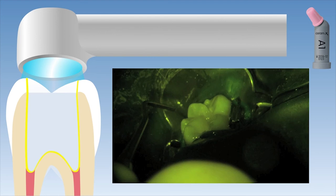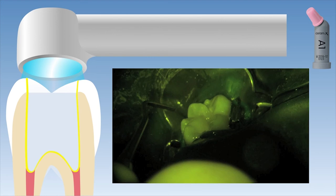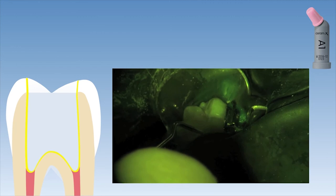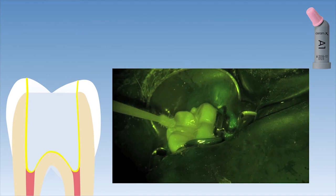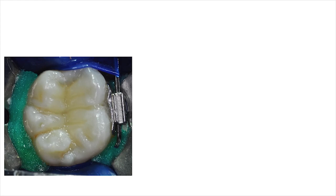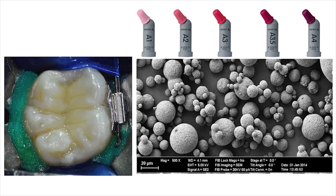The last step for restoration of this access cavity is to cover the SDR material with a normal, regular viscosity composite resin. On this video you can see that the SDR material was capped by applying Ceram X Spectra ST composite resin, shade A1, using the successive cusp buildup technique. This figure demonstrates the aesthetically pleasing restoration obtained after finishing and polishing. The new Ceram X Spectra ST material contains primary glass fillers with a mean size of 0.6 microns to create granulates in a mean size of 15 microns, produced in a spray drying process, resulting in nice rounded spheres.